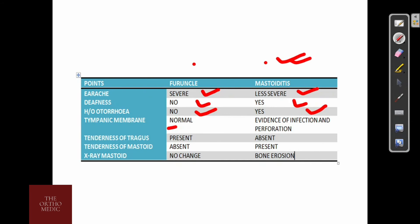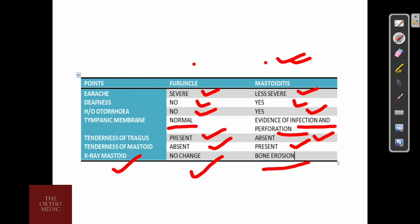The tympanic membrane is normal in furunculosis, whereas there is evidence of infection and perforation in mastoiditis. If we press on the tragus, tenderness is present in furunculosis but absent in mastoiditis. If we press on the mastoid region, tenderness is absent in furunculosis but present in mastoiditis. On X-ray of the mastoid region, there is no change in furunculosis but bony erosion is seen in mastoiditis.